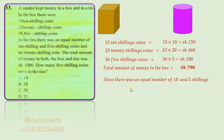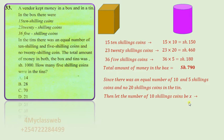Now since there was an equal number of 10 and 5 shilling coins and no 20 shilling coins in the tin, then we shall assume that the number of coins for the 10 shilling were x.